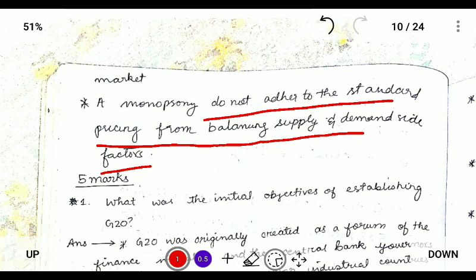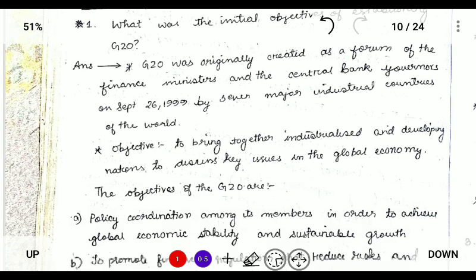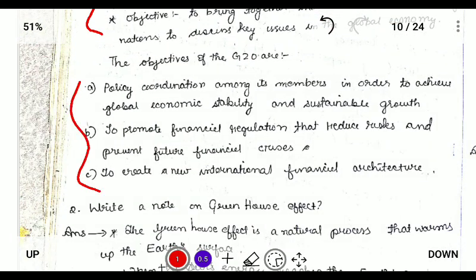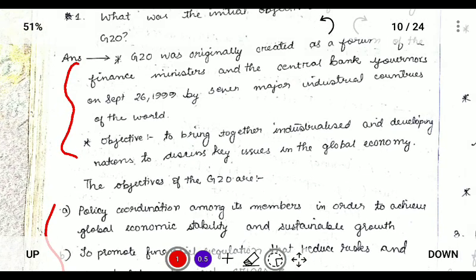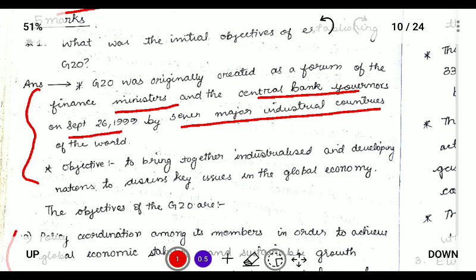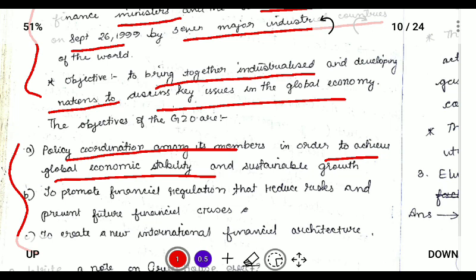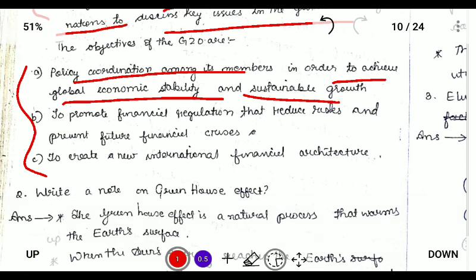Now we'll start with the five-mark questions. What were the initial objectives of establishing the G20? The G20 is a forum for finance ministers and central bank governors, established in September 1999 by seven major industrial countries. It was formed to bring together industrialized and developing nations to discuss key issues in the global economy. The objectives are: global coordination among members to achieve global economic stability and sustainable growth, to promote financial regulation and reduce risk, and to create an international financial architecture.